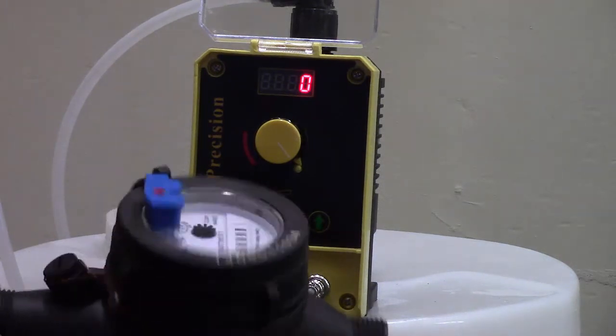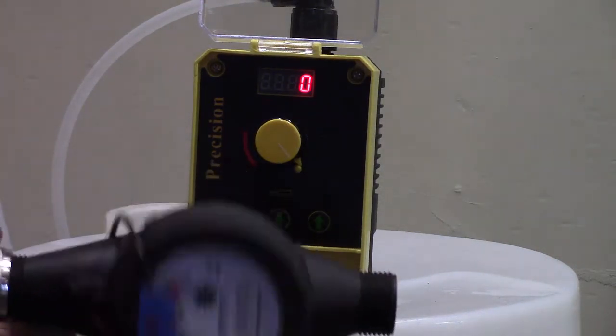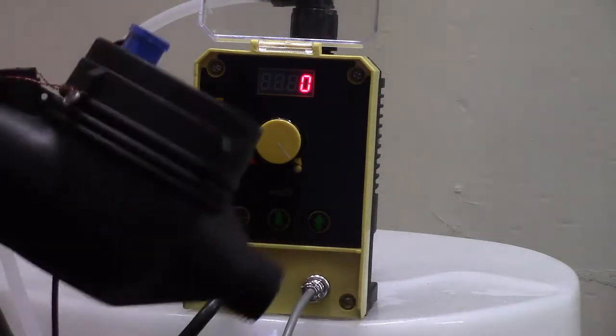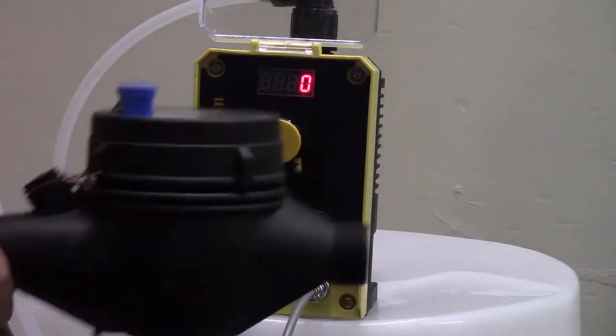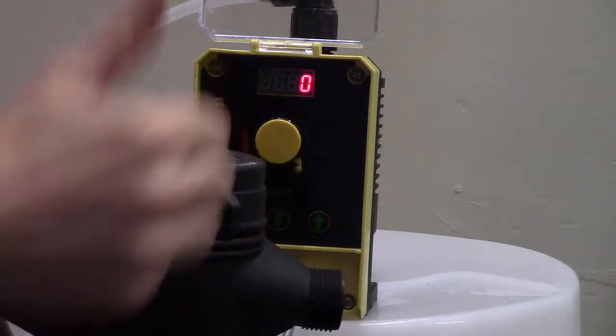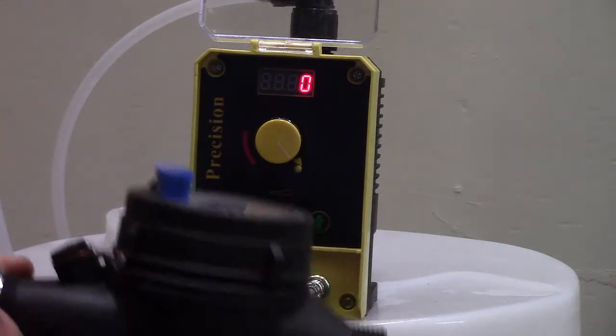It's important when you install the meter that the meter is not at an angle and not upside down. It wants to be flat in space with the meter facing straight up.